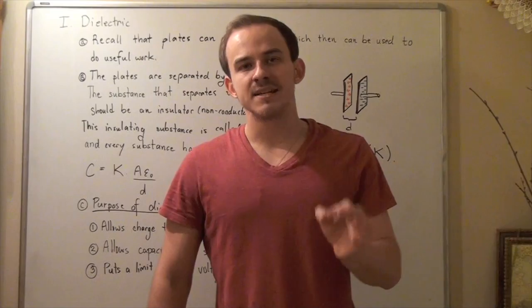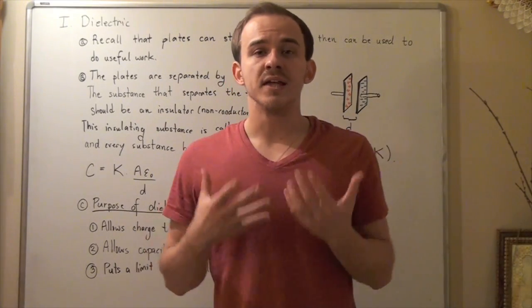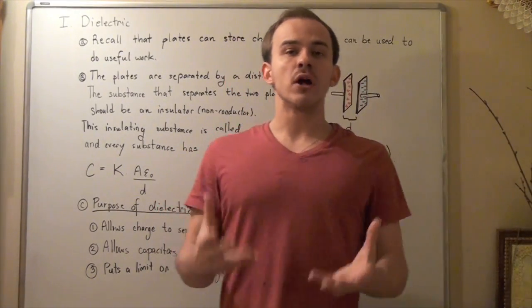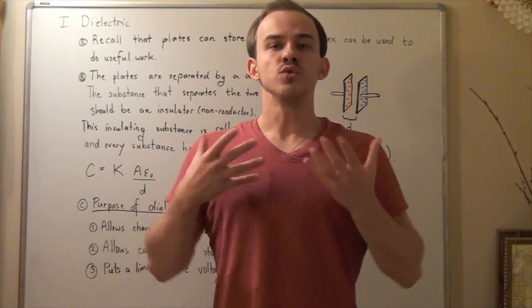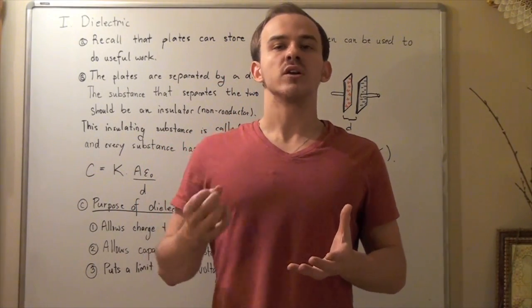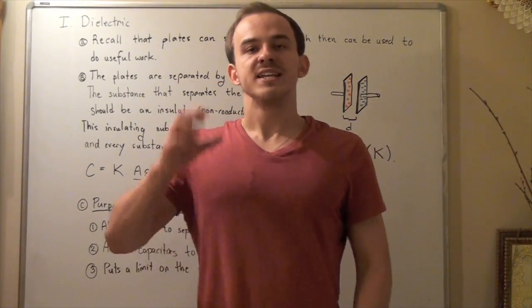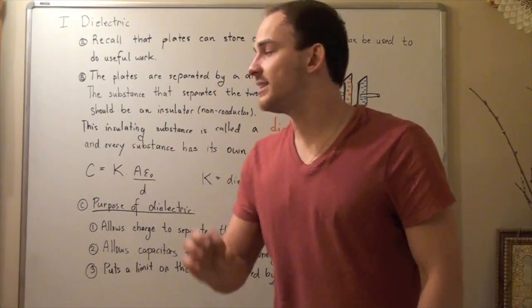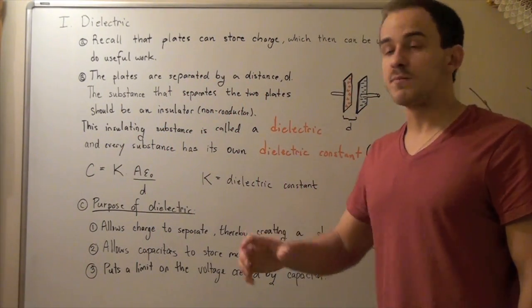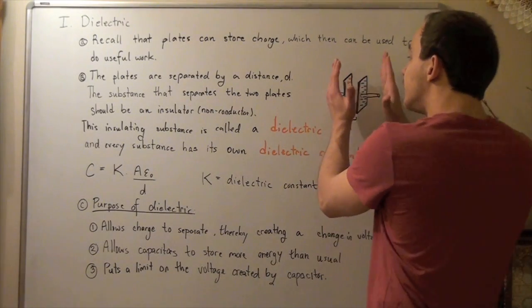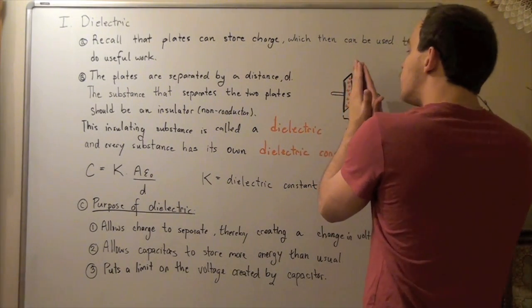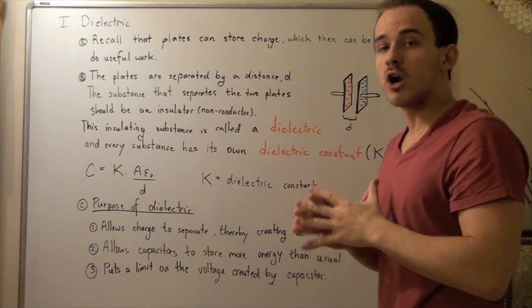A capacitor is simply a plate that has the ability to store charge. And this electric charge can then be used to do useful electric work, such as power a motor or a light bulb. Now, let's look at a parallel plate capacitor. A parallel plate capacitor is composed of two parallel plates of the same size that create a difference in electric charge.